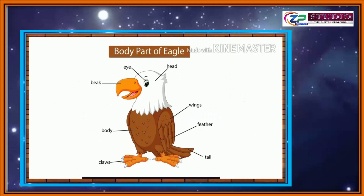Now we will see the body parts of a bird. You can see the eyes, head, beak (sores), wings (pankha), feathers (pisse), tail, body, and claws (panje). Claws are the structure useful for birds to catch insects or any hunting material, because birds are aerial animals.